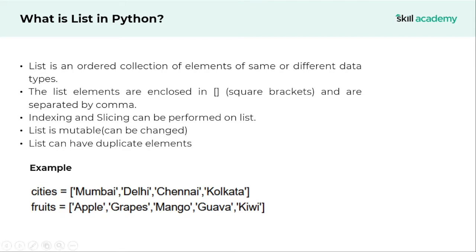Indexing and slicing can be performed on the list. The primary reason we are able to perform indexing and slicing on a list is because list is an ordered collection of elements. So if it is ordered, we can perform indexing and slicing.